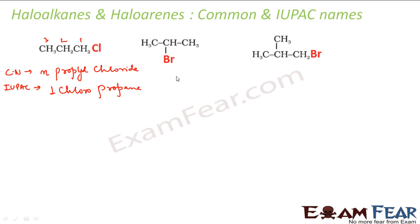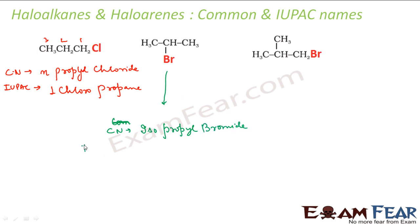Let me change the color and try this compound: CH3CHCH3Br. For the common name, it will be ISO because the bromine is attached somewhere in the middle, so it will be ISO — 1, 2, 3 prop — isopropyl bromide. For the IUPAC name, let's number it 1, 2, 3 — so it will be 2-bromopropane. That will be the IUPAC name of this compound.